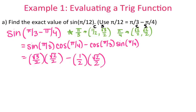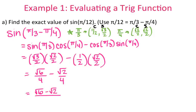Now let's simplify the expression. Root 3 times root 2 is root 6 over 4, minus root 2 over 4, and we can combine this to a single fraction, which gives us root 6 minus root 2 over 4. That cannot be simplified any further, so there is your answer.